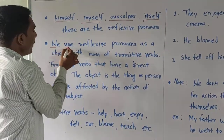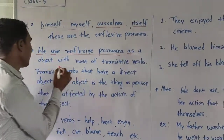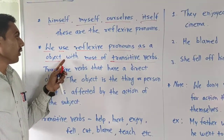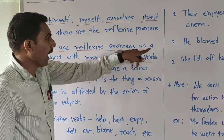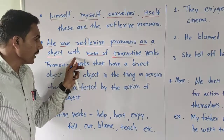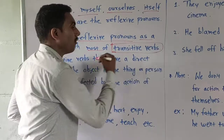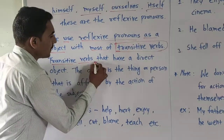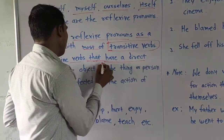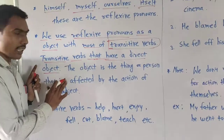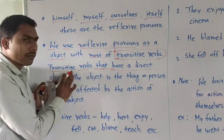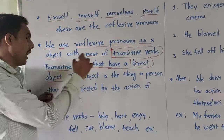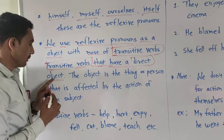Dear students, look here. We use reflexive pronouns as an object with most transitive verbs. This is one rule. Transitive verbs are verbs that have a direct object. When we ask a question to the verb, that verb gives a direct or definite answer — that verb is called a transitive verb.